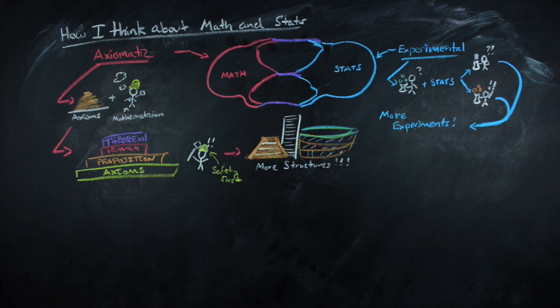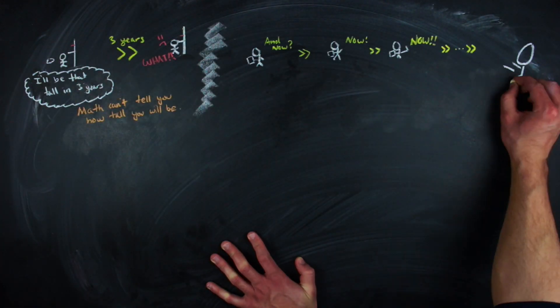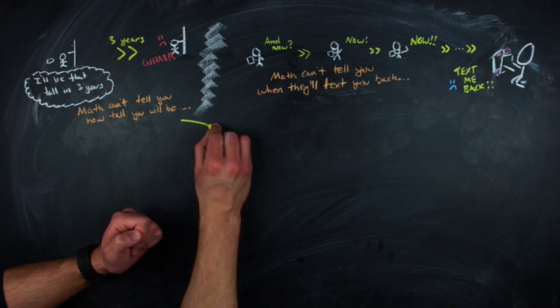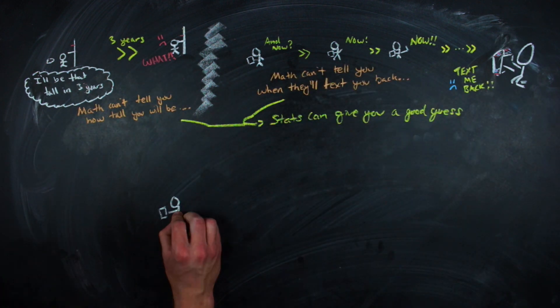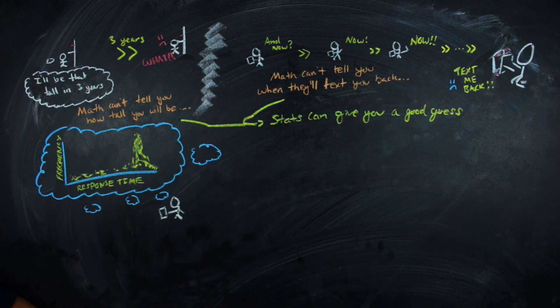Of course, that's not to say that one is better than the other. Although I do find math more appealing, there are some things math can't do. Math can't tell you how tall you'll be or when your next text message will arrive. But stats can give you a pretty good idea by looking at past data and making an educated guess with things like a statistical estimator.